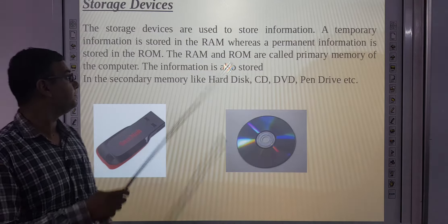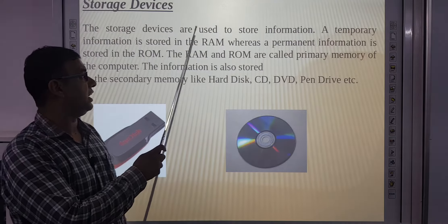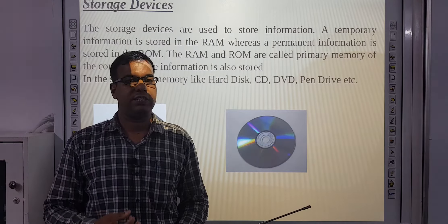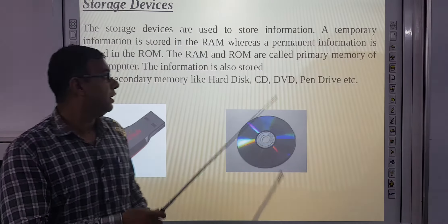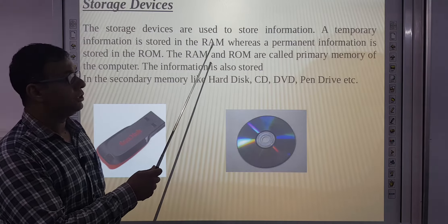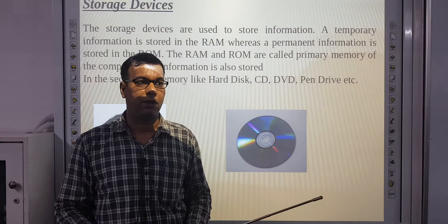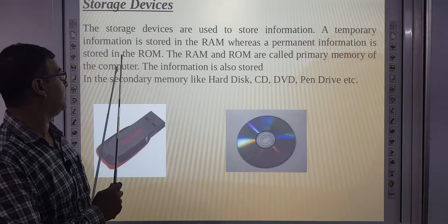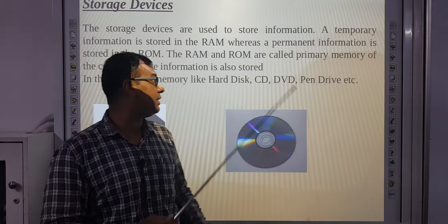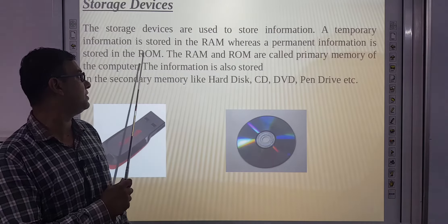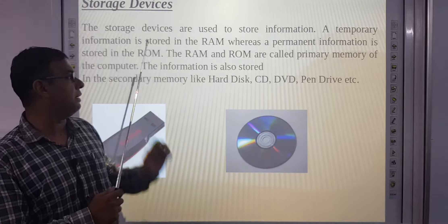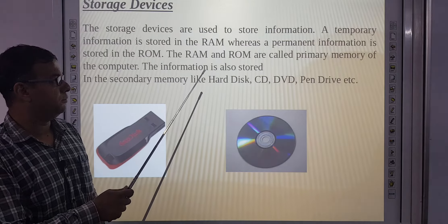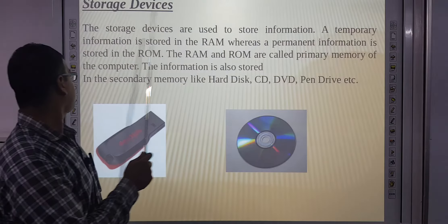Next, storage devices. The storage devices are used to store information. Temporary information is stored in the RAM — Random Access Memory. Permanent information is stored in the ROM — Read Only Memory. The RAM and ROM are called primary memory of the computer.